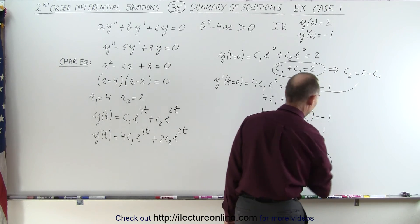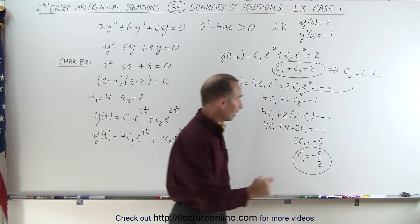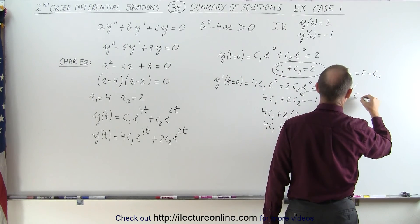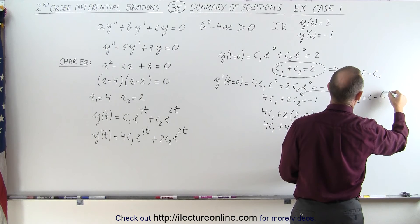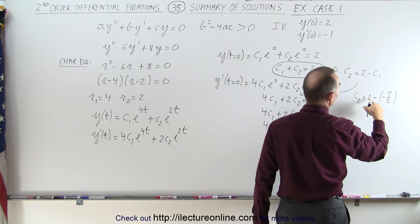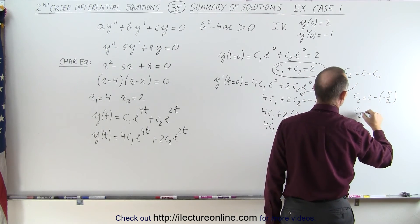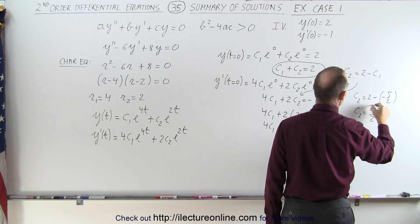I got my first constant, and now finding my second constant, I plug that in here. c2 is equal to 2 minus minus 5 over 2. That would be 4 over 2 plus 5 over 2, or c2 is equal to 9 over 2.